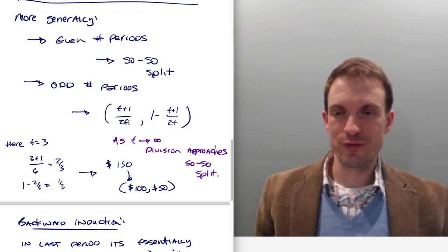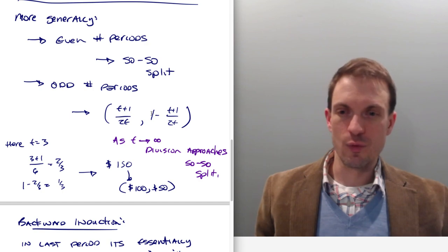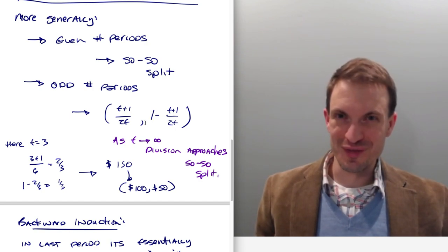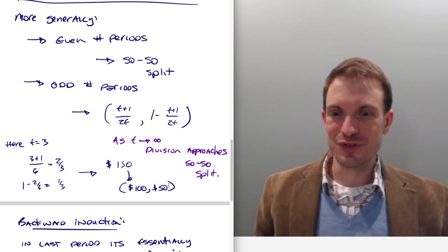So two thirds of the surplus should go to person A. Sure, two thirds of 150 is 100. And then one minus two thirds, or one third, or one third of 150, which is 50, goes to person B.